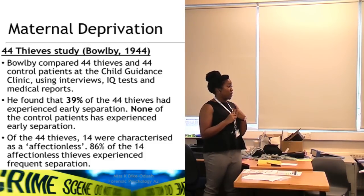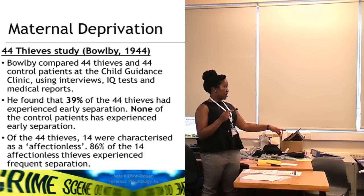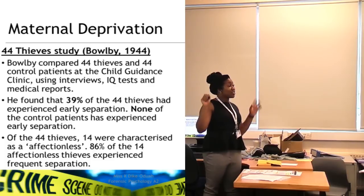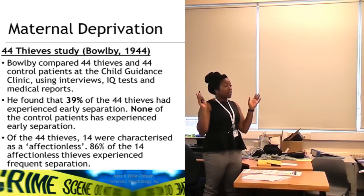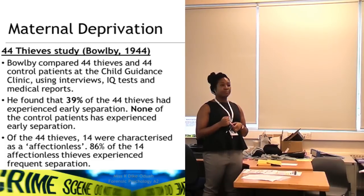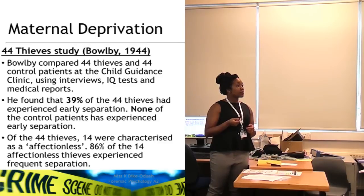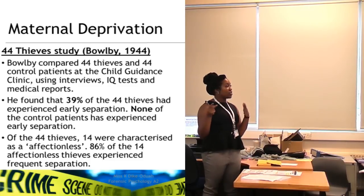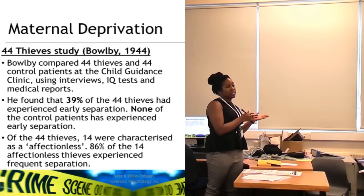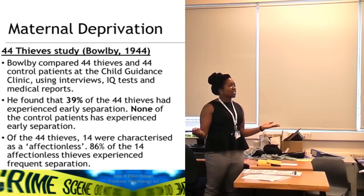He also interviewed the children and their parents. The sample size of 44 is not large. How were the control patients selected — were they really a good control group if they were already attending a child guidance clinic? Because the study took place there, you can't generalise the findings to the broader normal population.